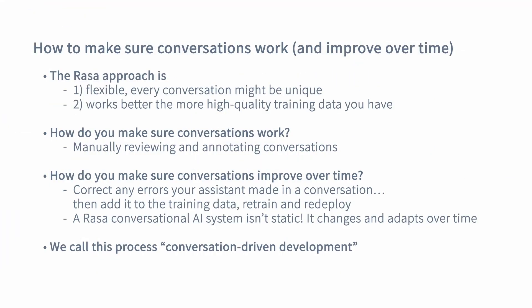Once you have natural language understanding to get from text to features and a dialogue policy to decide what to do next, how do you make sure conversations actually work and improve over time? We recommend manually reviewing and annotating conversations, correcting any errors your assistant is making, adding that corrected data to your training data, retraining your assistant, and redeploying. This is essentially CI/CD for a machine learning model running your chatbot. We call this process conversation-driven development. You end up with an assistant that behaves predictably, and because you can retrain and redeploy fluently, you can update it as needed — for example, if users start asking about something new.